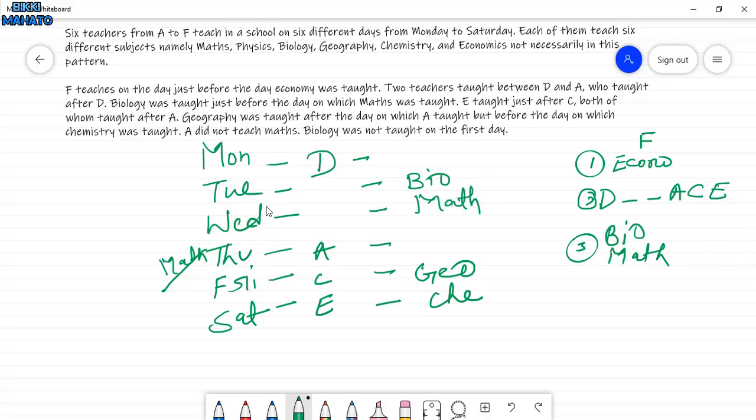So here, meaning just before F, economy will be there. So F will be here on Monday, and the next day is not there, so F will be here, and A will teach Economics. Remaining is only Physics, which D will teach. So this is solved in a very simple way.